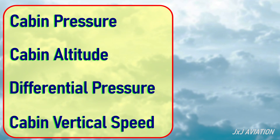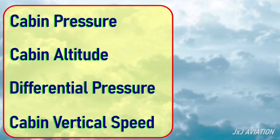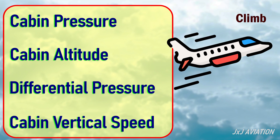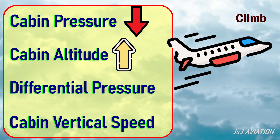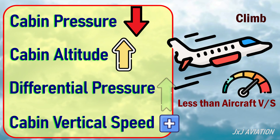Now let's look at the relationship between these. Let's consider an aircraft climbing to its cruise altitude. During the climb, the cabin pressure will be decreased. When the cabin pressure decreases, the cabin altitude increases. The cabin vertical speed will be in the positive range, but it will be less than the aircraft's vertical speed. The differential pressure will gradually increase.